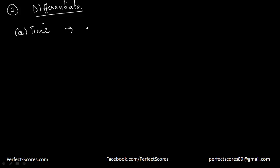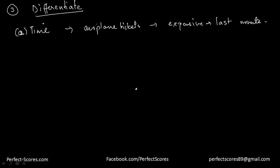The first way is by time — you can charge according to time. For example, airplane tickets are more expensive if you book at the last minute compared to booking one or two months in advance. With movie tickets, someone coming to the 10 a.m. show is charged less than someone at the 7 p.m. show. So you are differentiating consumers based on time.